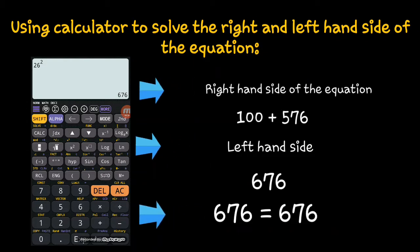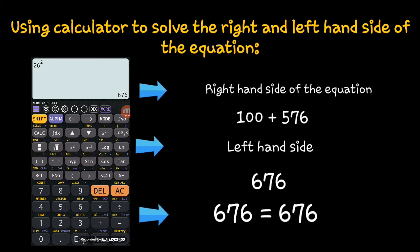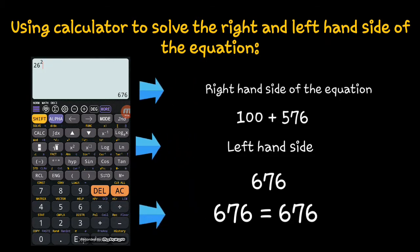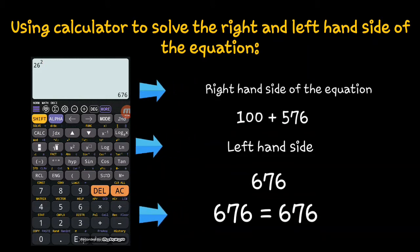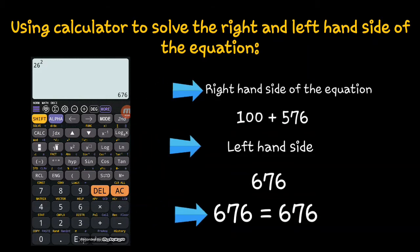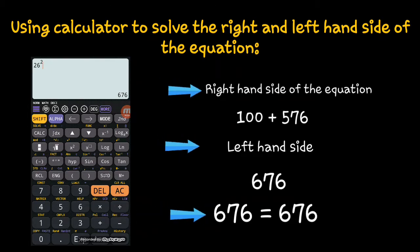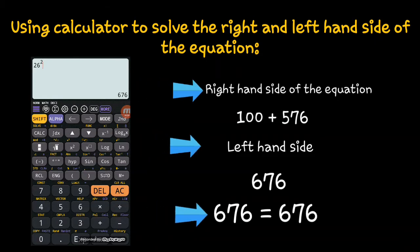By adding the right-hand side of the equation we get 676. The left-hand side is also 676. So we were able to prove that c squared is equal to a squared plus b squared — they are the same. Therefore, the triangle with sides 10, 24, and 26 is a right-angled triangle.